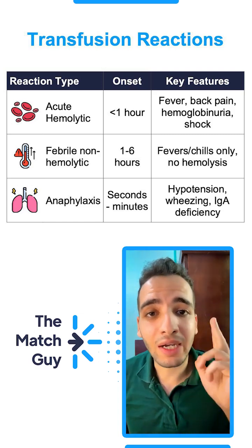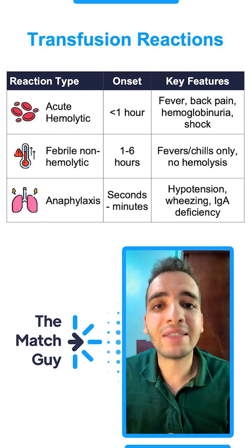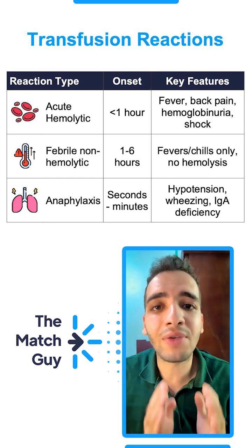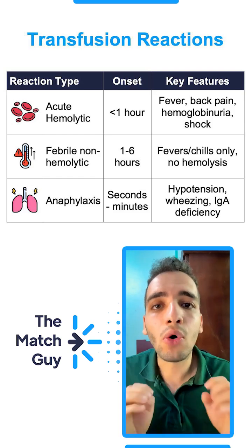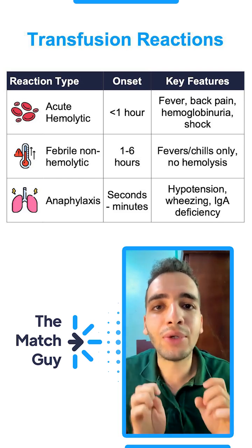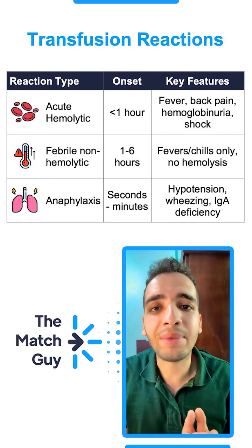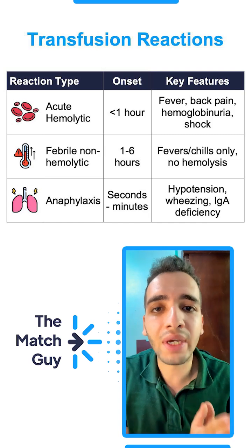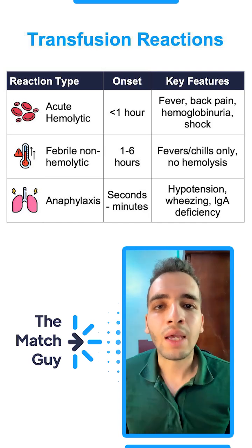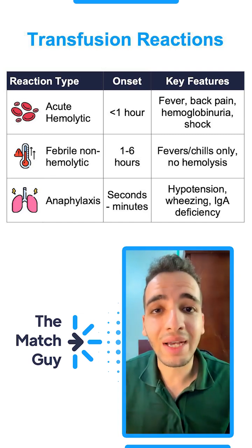If it happens within an hour and the patient develops flank pain or hemoglobinuria, this is acute hemolytic reaction, and it happens from ABO incompatibility.